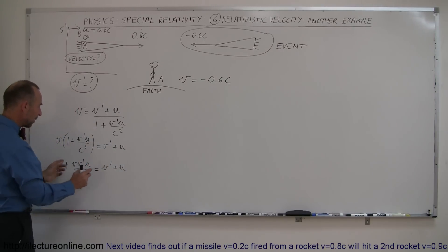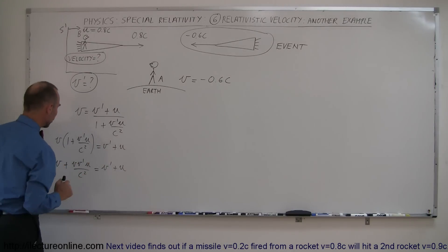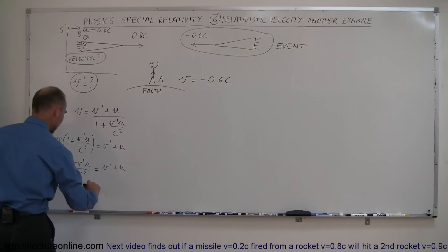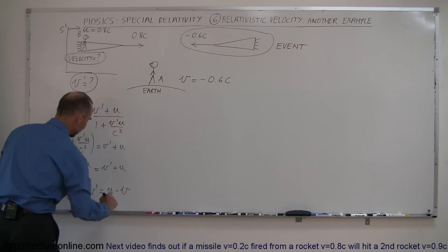And of course, since we're looking for V', we want all the terms with V' on the left side and all the other terms to the right. So this becomes VV'U over C squared minus V' when we move it across the equal sign, equals U minus V when we bring this over here.